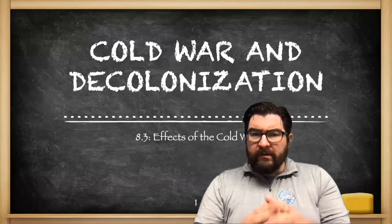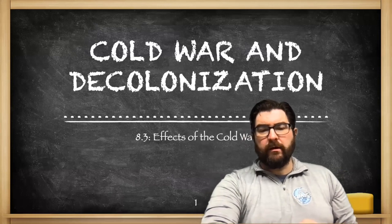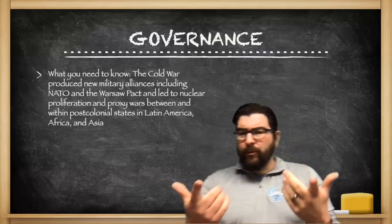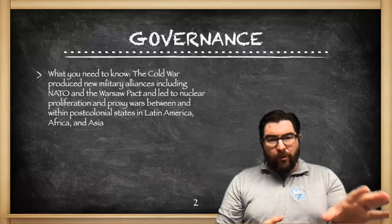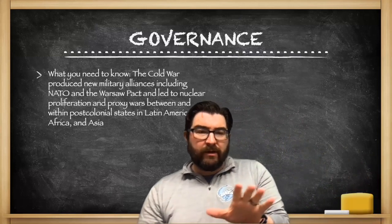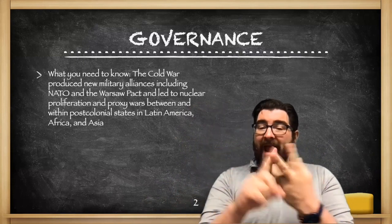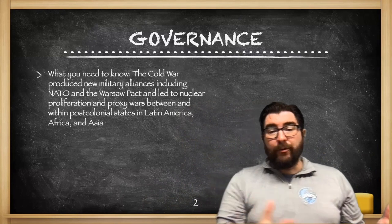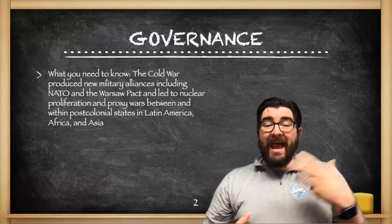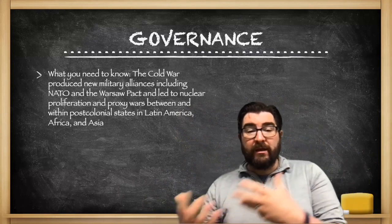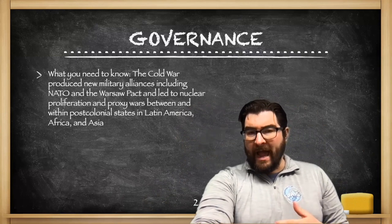We're back at it today, and we're going to continue Unit 8 of the AP World Curriculum, talking about the effects of the Cold War. We're going to be living in the theme of governance here, and the Cold War is going to produce new military alliances, including NATO, the North Atlantic Treaty Organization, and the Warsaw Pact. It will lead to nuclear proliferation — the spread of nuclear weapons — and proxy wars between and within post-colonial states in Latin America, Asia, and Africa.